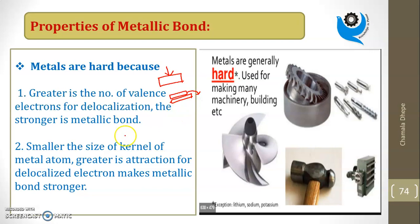The second reason is smaller size of kernel. The nucleus with inner filled shells form the kernel. Smaller size of kernel of the metal atom, greater is the attraction for the delocalized electron. This attraction is so strong that the bond doesn't break easily. When I apply force with a hammer, the layers just change position and adjust, but don't break.